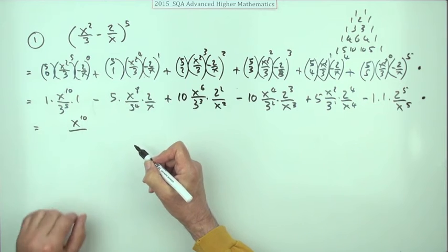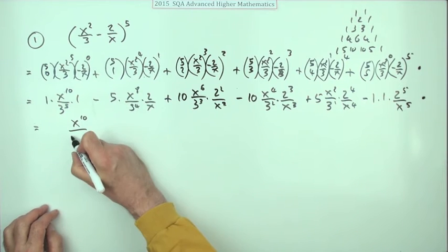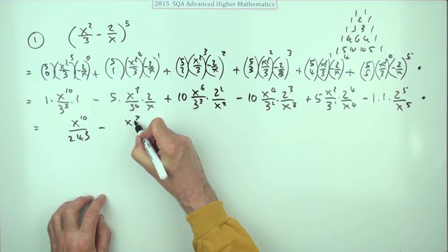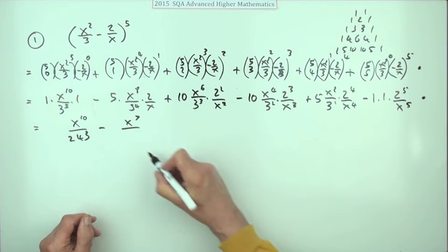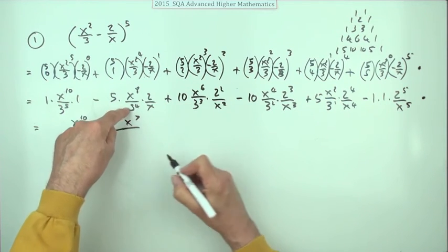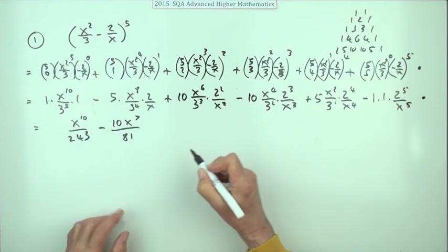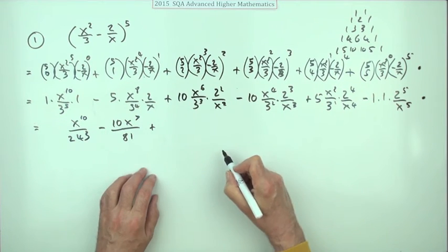The final line is going to be: what have we got? That's an x to the power 10 and 3 to the power 5 - 81 times 3 is 243 - and that's a minus. This time it's an x to the 7, and there's not a lot you can do. It's an 81 underneath and a 5 times a 2 is a 10 above, and nothing's going to cancel.